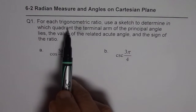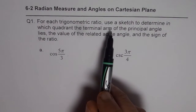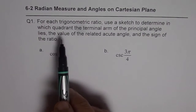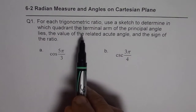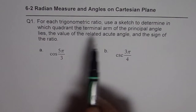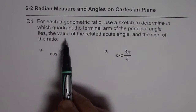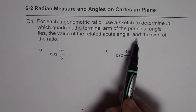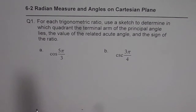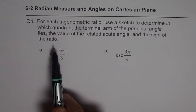For each trigonometric ratio, use a sketch to determine: in which quadrant the terminal arm of the principal angle lies, the value of the related acute angle, and the sign of the ratio. So we are asking for three things.